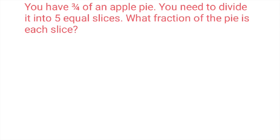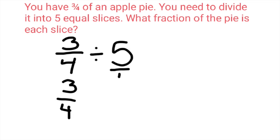Let's try one out. We have 3 fourths of an apple pie. You need to divide it into 5 equal slices. What fraction of the pie is each slice? So we have 3 fourths divided by 5. We keep the first one as 3 fourths. 5 becomes 5 over 1. The reciprocal of that is 1 fifth. We change divide to multiply.